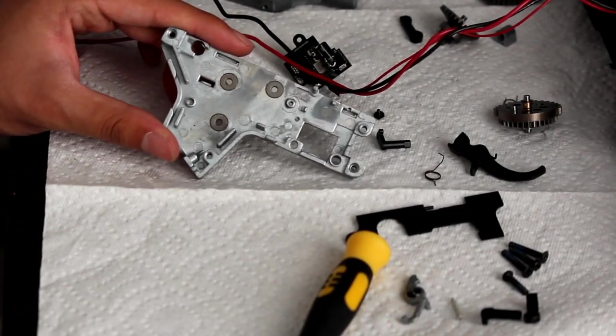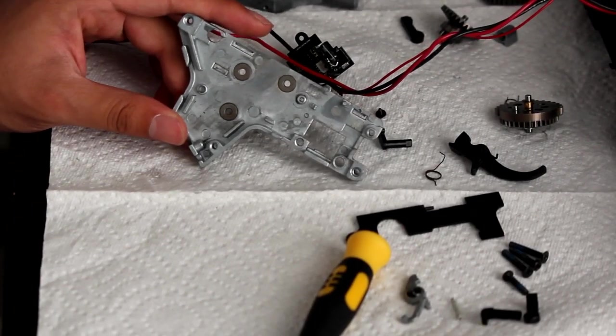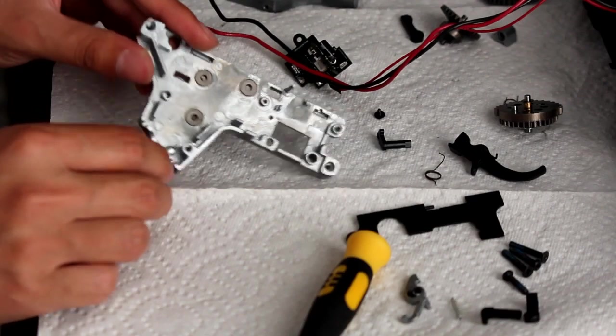Alright, so now that we've disassembled everything, we have an empty gearbox shell. So for the reassembly, we're first going to start with the trigger.